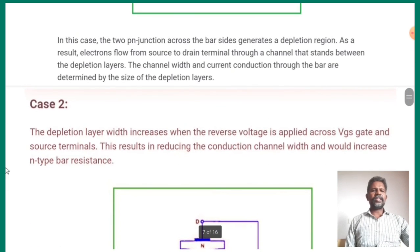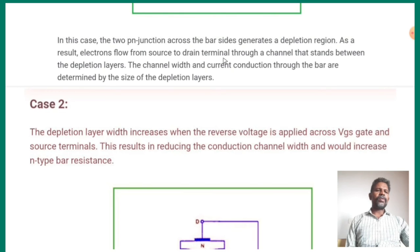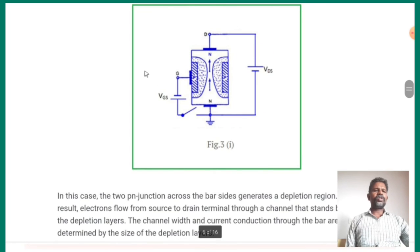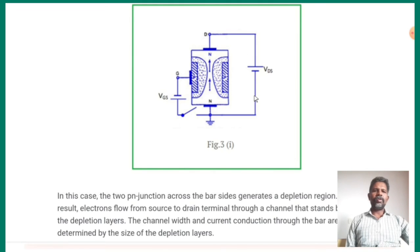In this case, the two PN junctions across the bar sides generate the depletion region. As a result, electrons flow from source to drain. The channel width and current conduction through the bar is determined by the size of the depletion layer. It flows current from source to drain, carrying electrons.